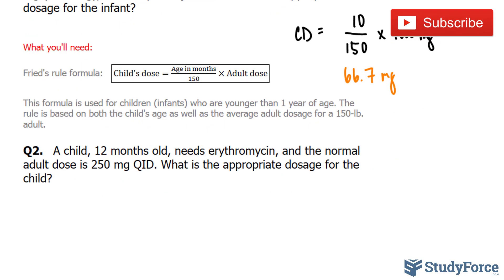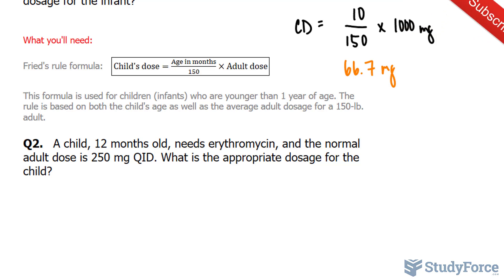Let's try another example. This time, a child 12 months old needs erythromycin, and the normal adult dose is 250 milligrams QID, which represents four times a day. What is the appropriate dosage for the child?